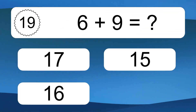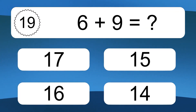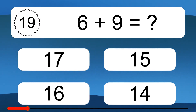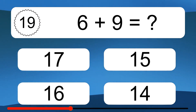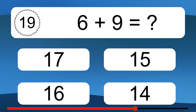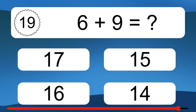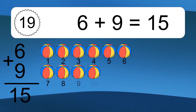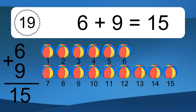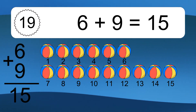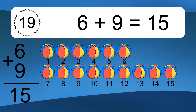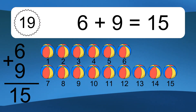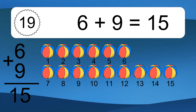6 plus 9 equals what? 6 plus 9 equals 15. Let's count it. 1, 2, 3, 4, 5, 6, 7, 8, 9, 10, 11, 12, 13, 14, 15.